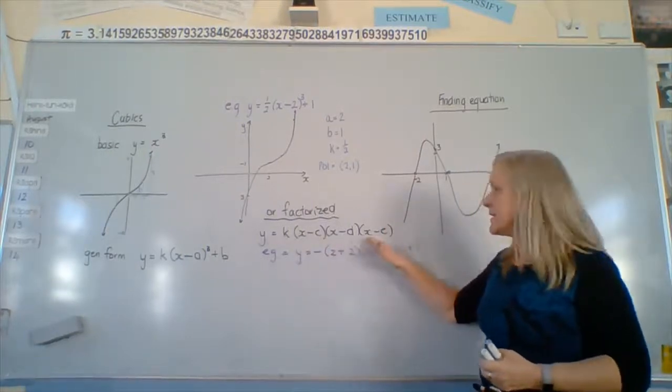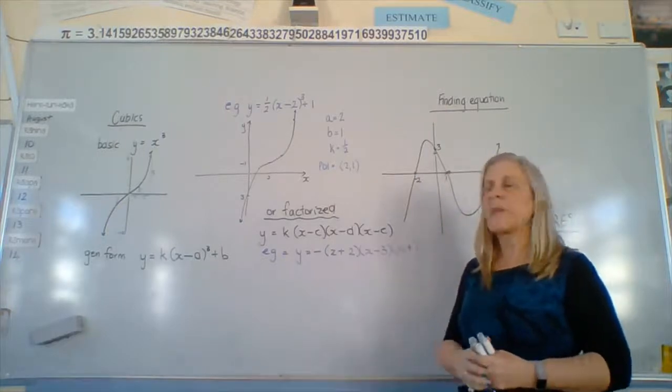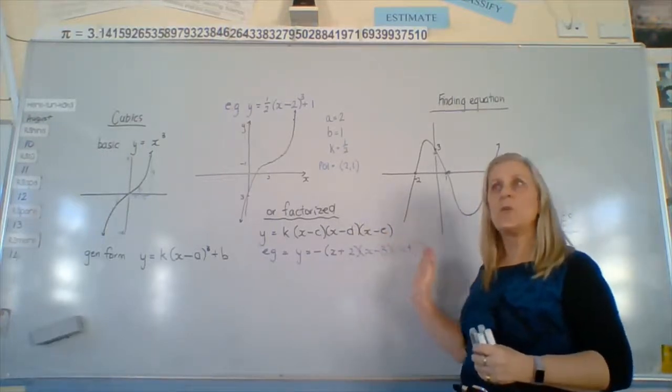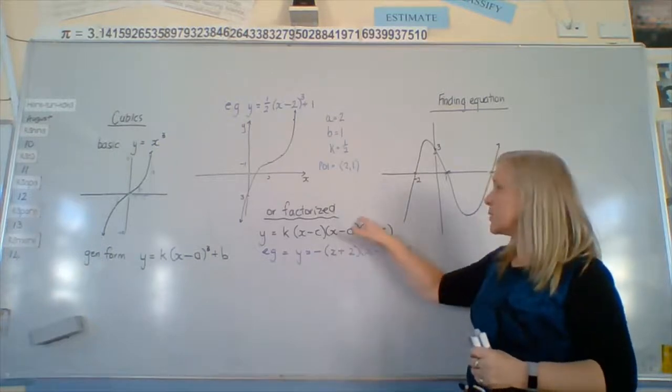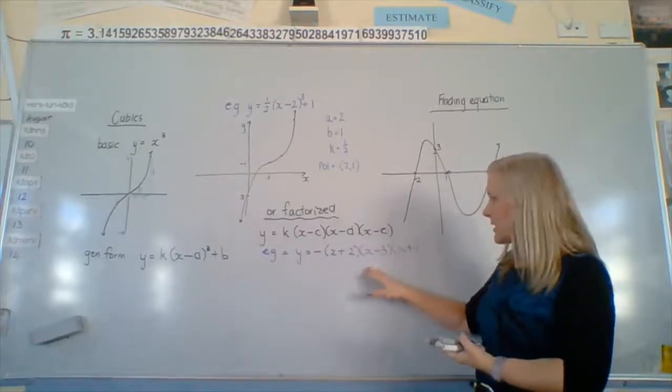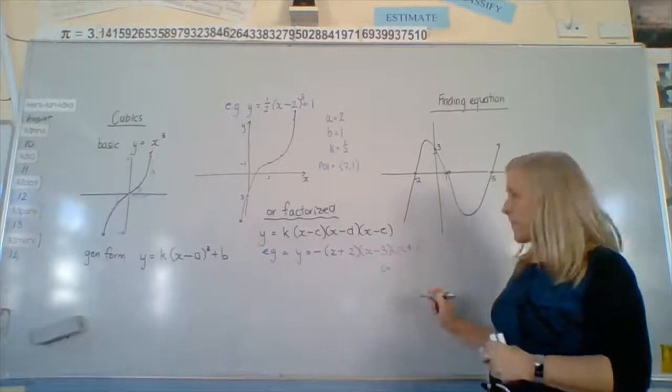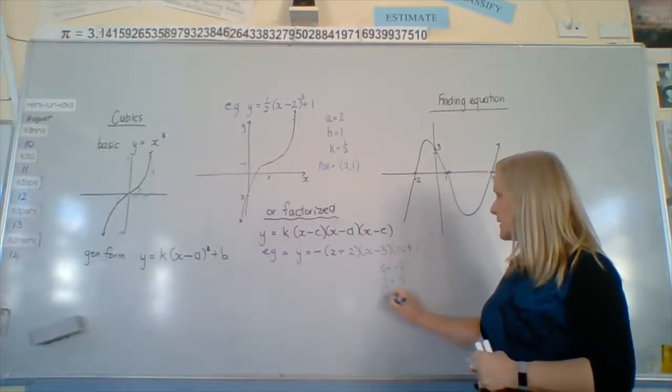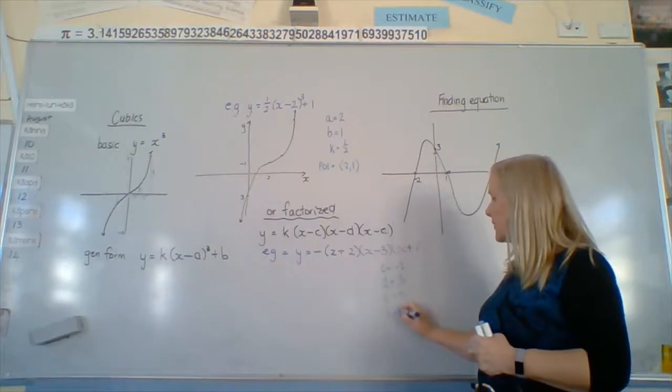In a factorised form like this, we've got 1, 2, 3 different places the graph goes through the x-axis. If two of those were the same, then the graph would still want to go around that point, but it would stop and move down at that point - not go through. So if there was two of these that are the same, or one with a squared next to it, that would form a turning point on the line. So we've got this one. So c is negative 2, d is 3, and e is negative 1. And k is negative 1.